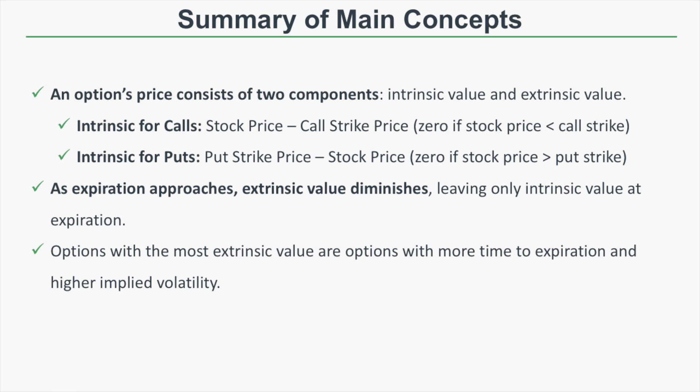That wraps up the main concepts. To recap: every option has two price components — intrinsic and extrinsic value. For calls, intrinsic value is stock price minus call strike price (zero if stock is below strike). For puts, intrinsic value is put strike price minus stock price (zero if strike is below stock price). As expiration approaches, extrinsic value decreases and only intrinsic value remains at expiration. Options with the most extrinsic value are those with more time to expiration and higher implied volatility.